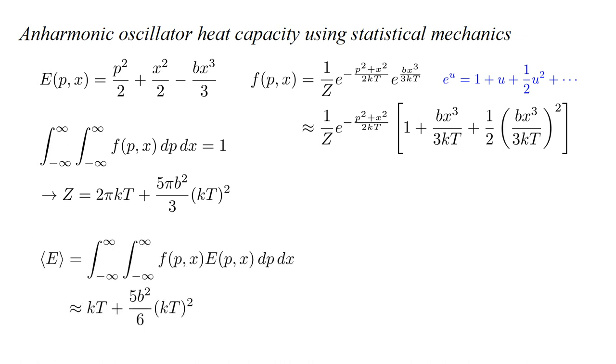Then we calculate the expected value of total energy as the integral, over all p and x, of f of p, x, times E of p x. To second order in temperature, we obtain kt, plus five b squared over six, times quantity kt, squared.